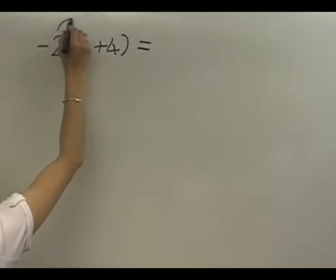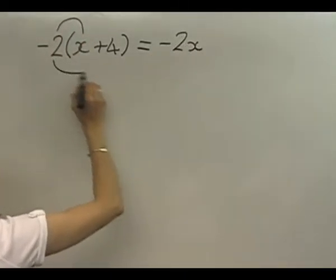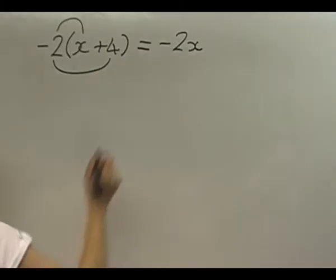It's negative 2 times x, which is negative 2x, and negative 2 times 4, which is negative 8.